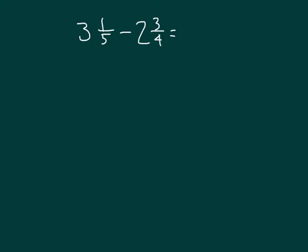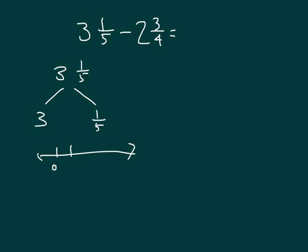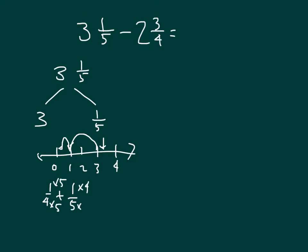Here we have 3 and 1 fifth minus 2 and 3 fourths. Breaking apart 3 and 1 fifth — remember it's 3 with 1 fifth — on a number line, instead of starting at 3 and 1 fifth, let's look at subtracting from 3. We subtract 2 first, because it's 2 and 3 fourths, then subtract 3 fourths. 1 minus 3 fourths is just 1 fourth. But we were supposed to start from 3 and 1 fifth, which is 1 fifth more. So our answer would be 1 fifth more than 1 fourth. Getting a common denominator — times 5 and times 4 — that's 5 twentieths plus 4 twentieths, which equals 9 twentieths.